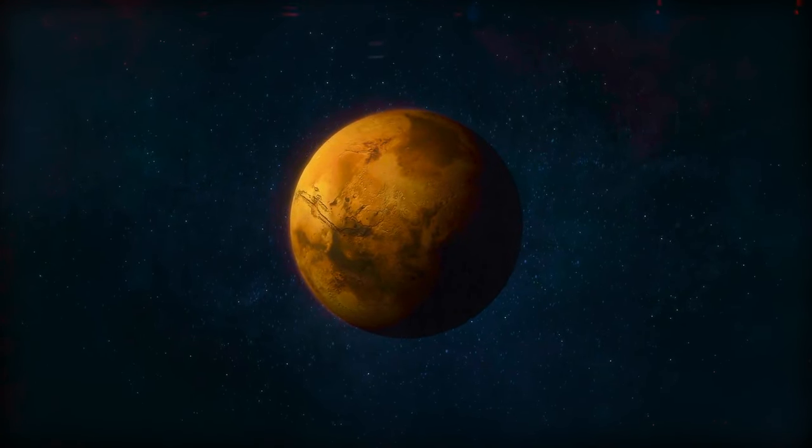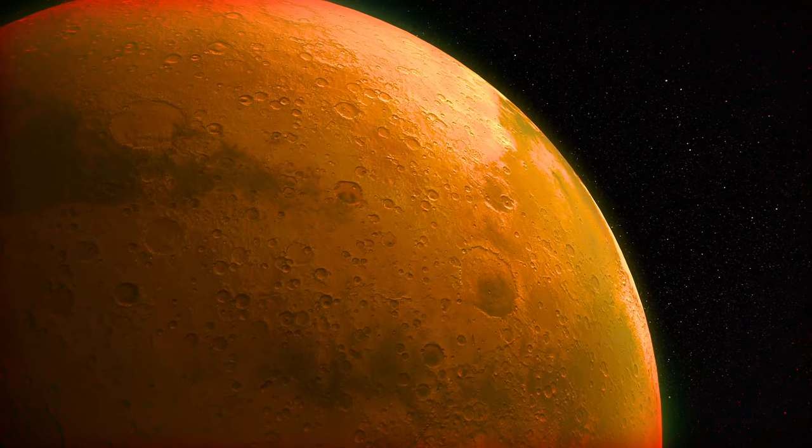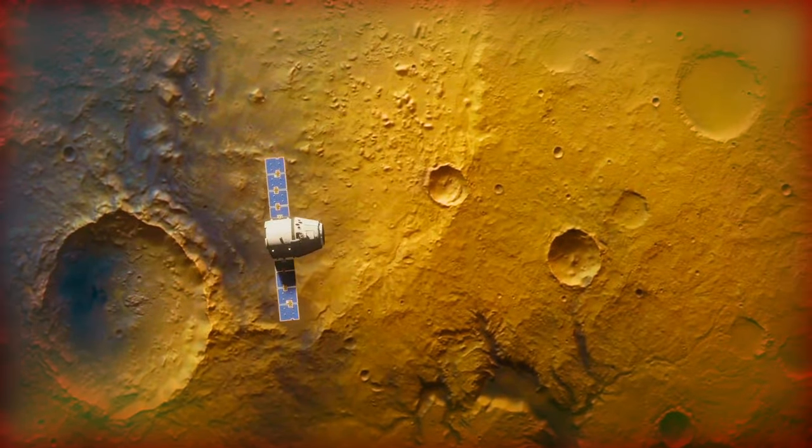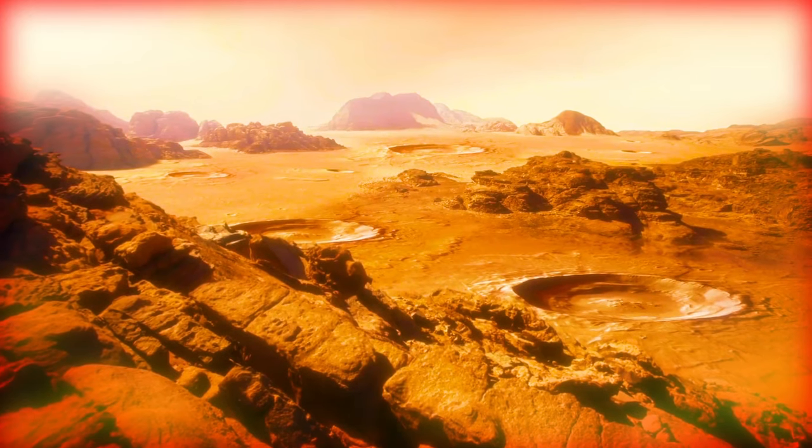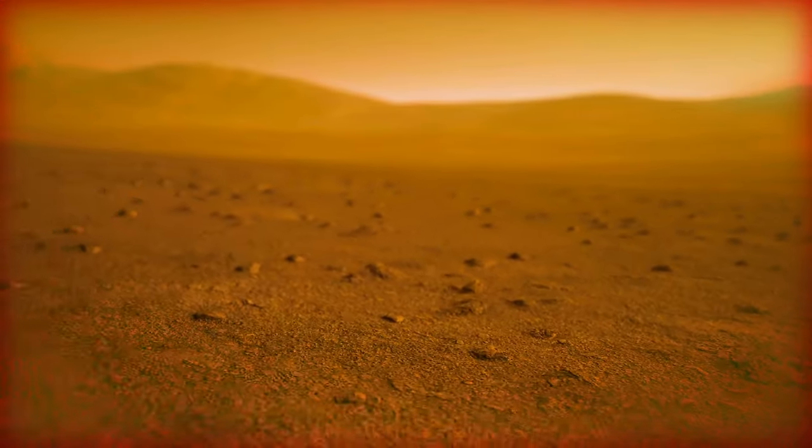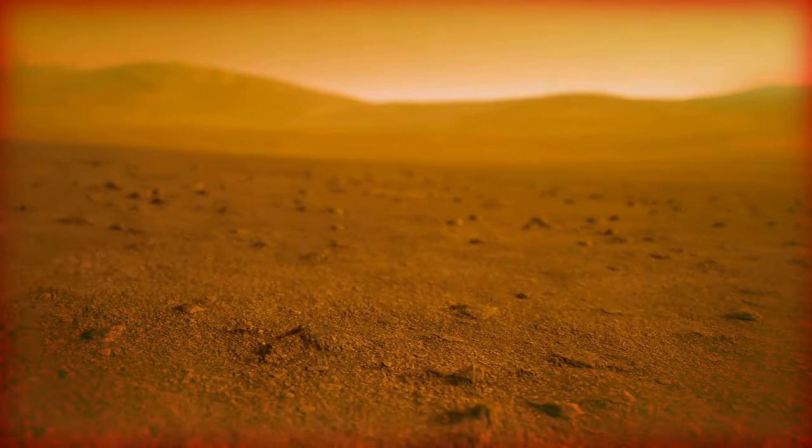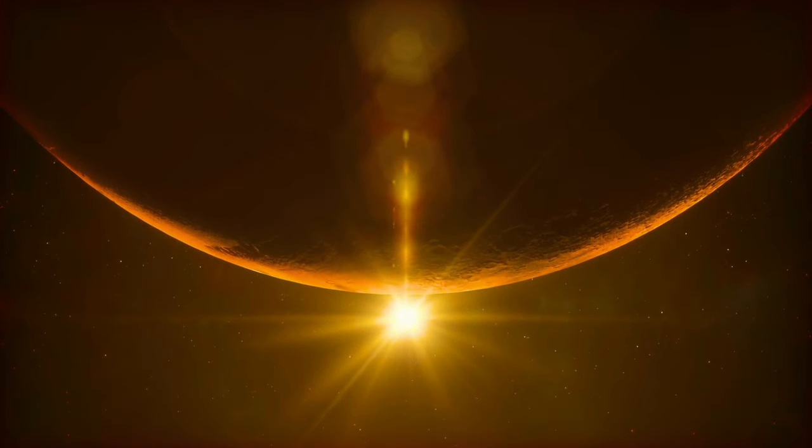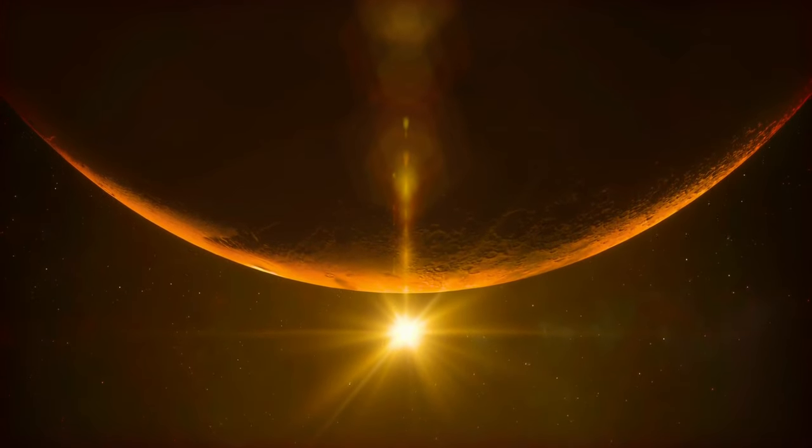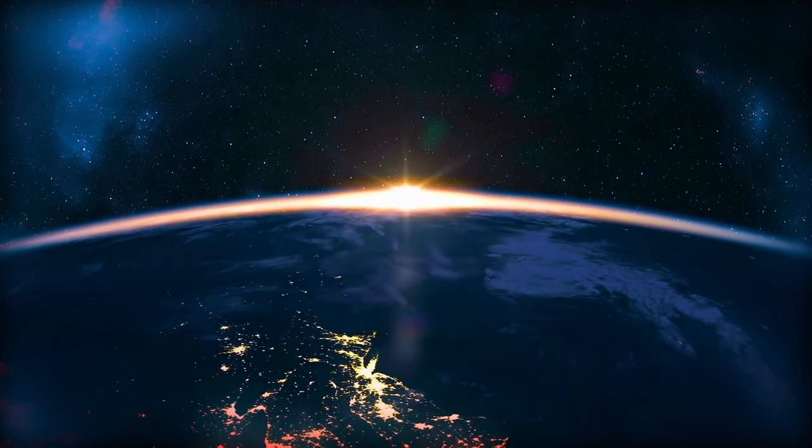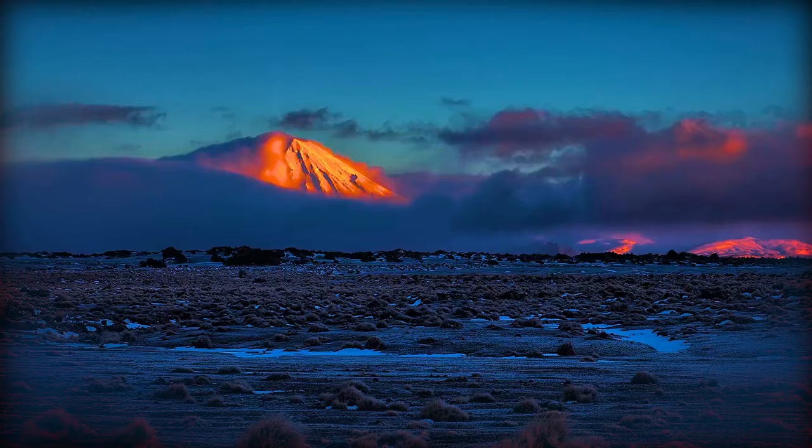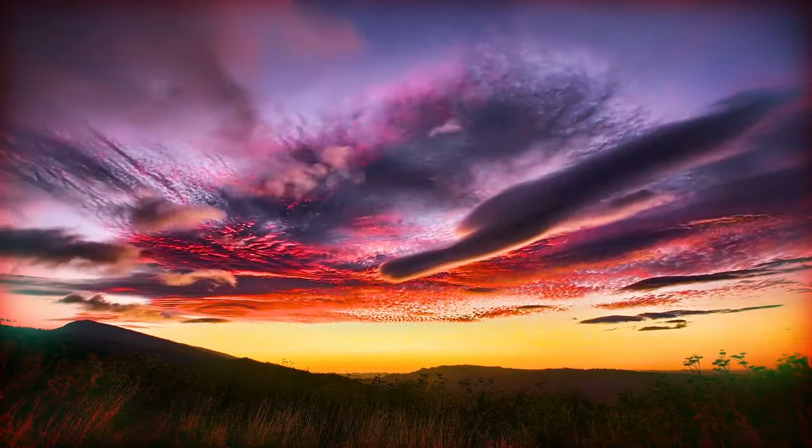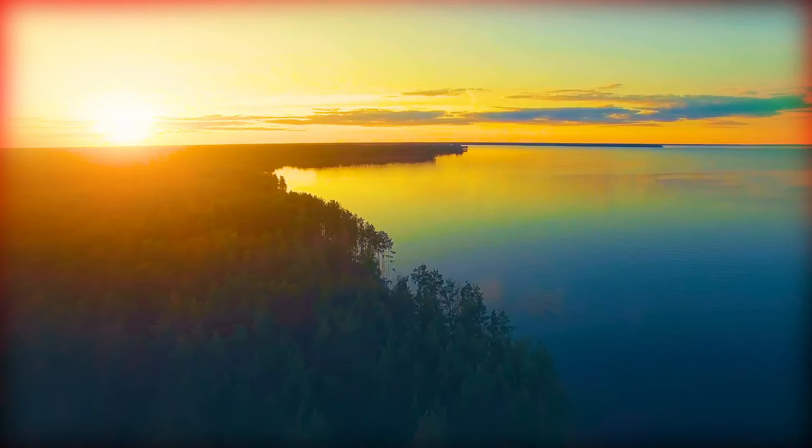The red planet has no seas, oceans, and lakes. Some scientists believe it's completely dry because its magnetic field disappeared. With no protection, Mars lost most of its atmosphere, and the sun's wind swept away all the surface water. But of course, this is just one of many theories. This took place billions of years ago, and no one can say exactly what happened. But don't worry, our planet won't turn into Mars anytime soon. The Earth's core is cooling very slowly. It will take another 2 billion years or so before it cools down completely.